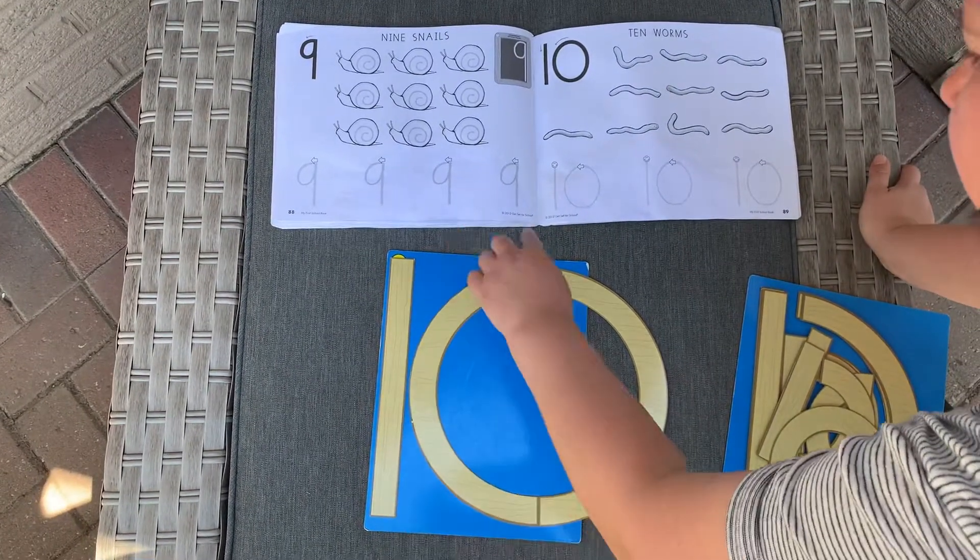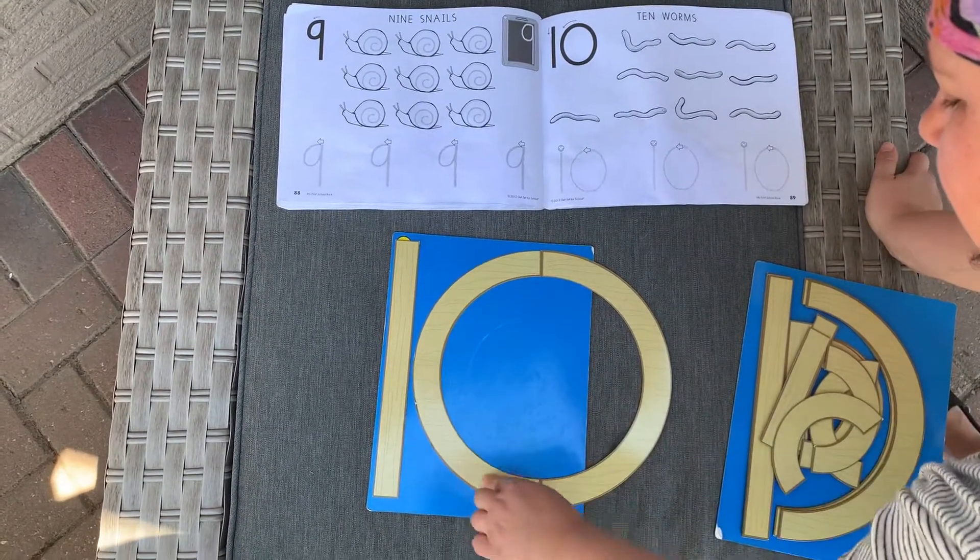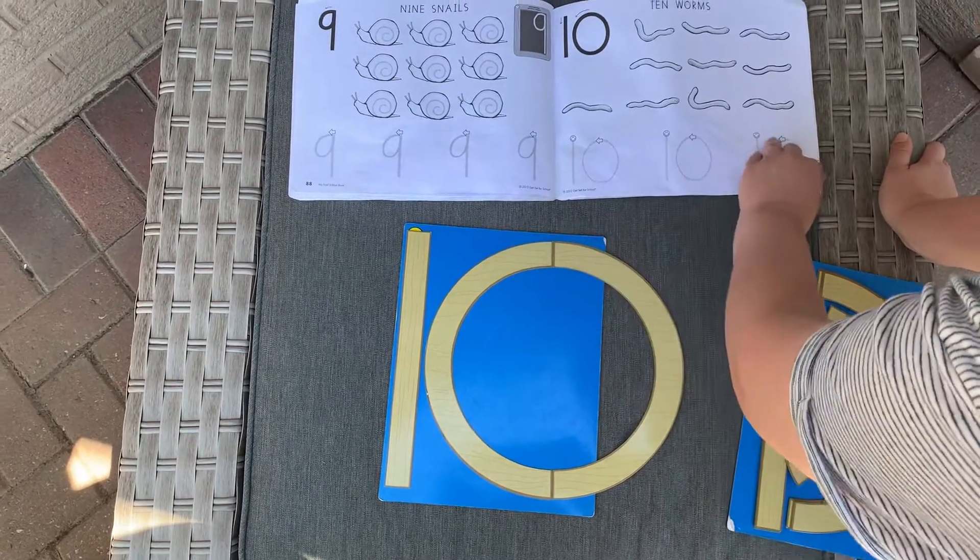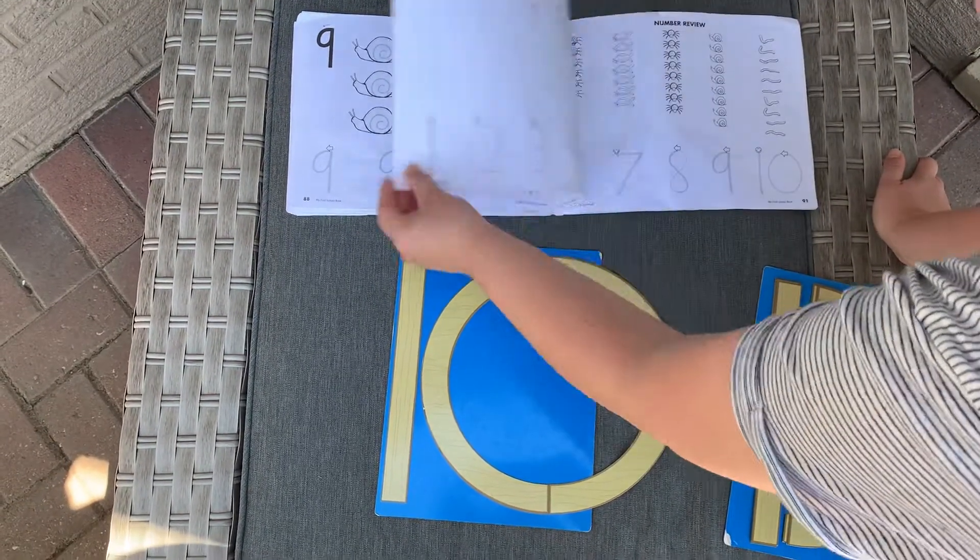Big line down, jump back up, big curves all around. And there are your numbers one through ten.